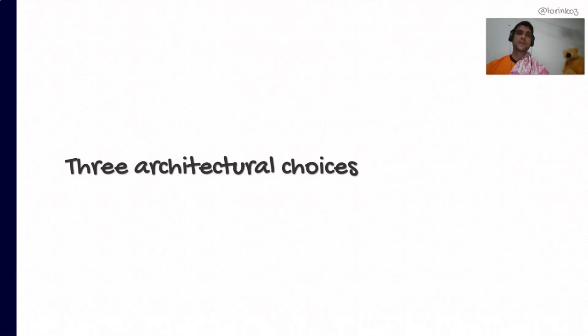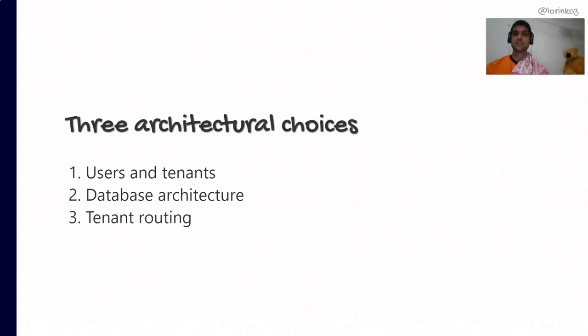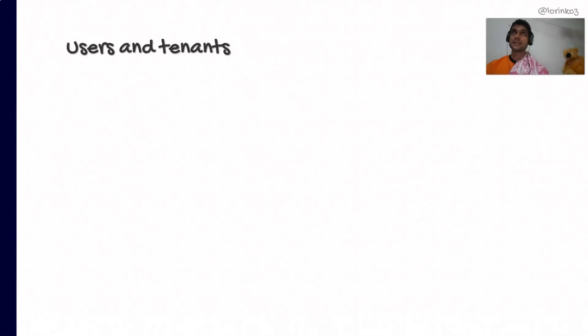Once we grasp the concept of the active tenant, there are three architectural choices we have to make in order to implement multi-tenancy in Django. Number one: the relationship between users and tenants. Number two: the database architecture. And number three: how tenant routing is going to be performed.